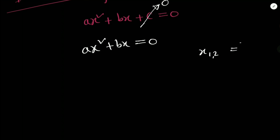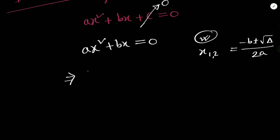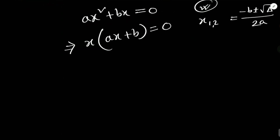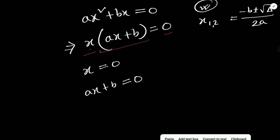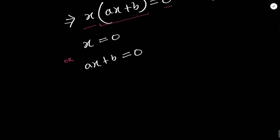You can solve it using the standard formula, but a shortcut exists. Factor out x as a common term: x(ax + b) = 0. This means either x = 0 or ax + b = 0. So one solution is x = 0, and from the second factor we can solve for the other solution.